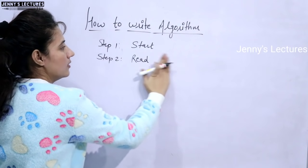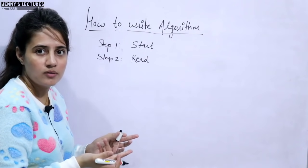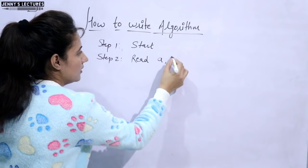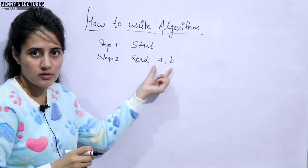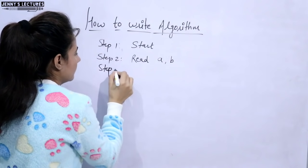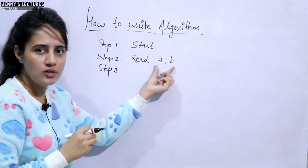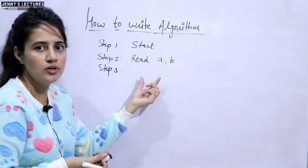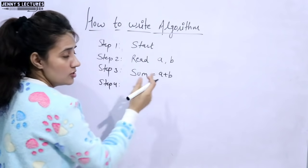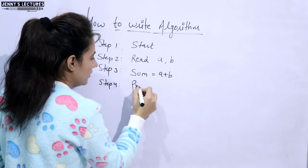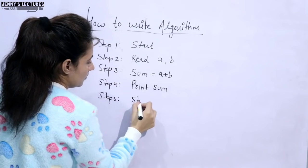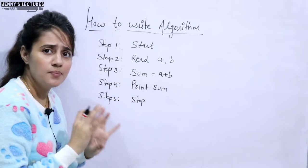Each instruction should be clear and unambiguous. It's not like that I'm simply writing read. Now this is what? We are not able to understand. It is an ambiguous statement. But if I'm writing read a and b, it means what? I'm reading two numbers. I'm inputting two numbers. Now next step. Now we need to process on these inputs. Process is what? You need to calculate sum. Now in step 4 what you will do? Just you will print sum. You can write here print sum, and step 5 is what? Stop, or here you can also write end. So this is a simple example.